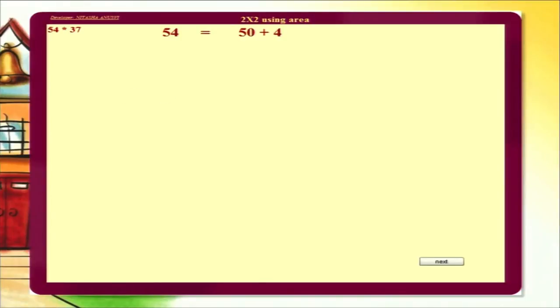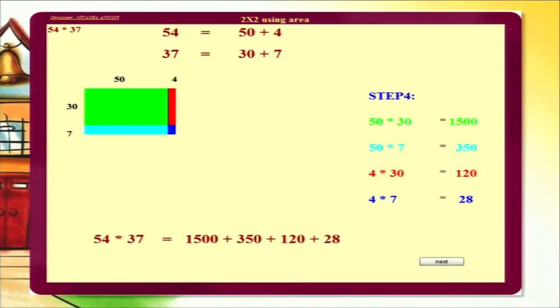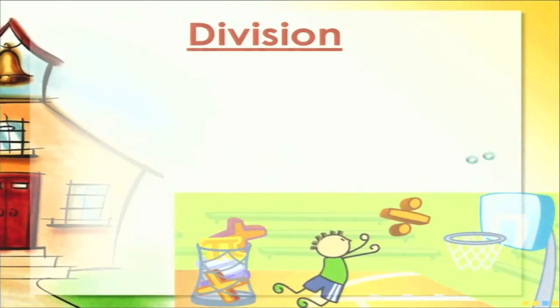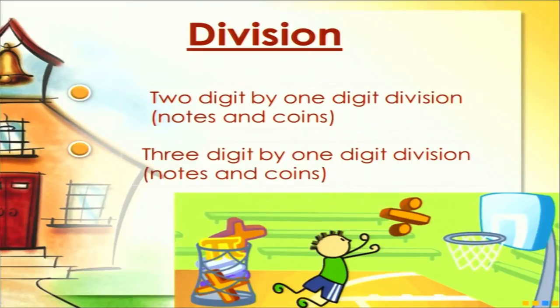In the multiplication activity, two random numbers are generated and represented in expanded form, then rectangles are shown with each rectangle's area represented, and finally the answer is displayed. Clicking next generates two new numbers. For the division activity, we have shown division by distribution of money. Two random number generators are used — one corresponds to the amount of money and the second to the number of students. Upon division, the amount each student receives is displayed in front of that student.